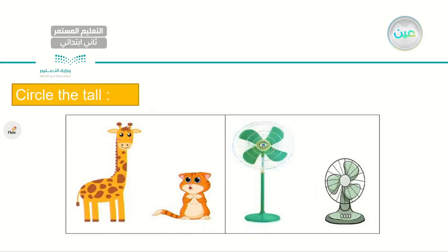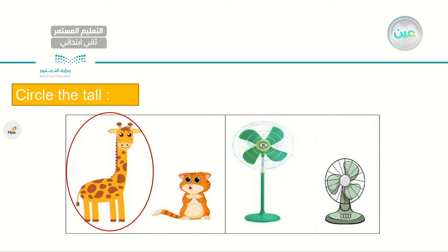Now I need you to do the opposite — circle the tall one. I have a giraffe and a cat. Which animal do you think is taller? It is the giraffe. The giraffe is tall. In the next picture I have two fans. Which one is tall? It is the green one — the green fan.